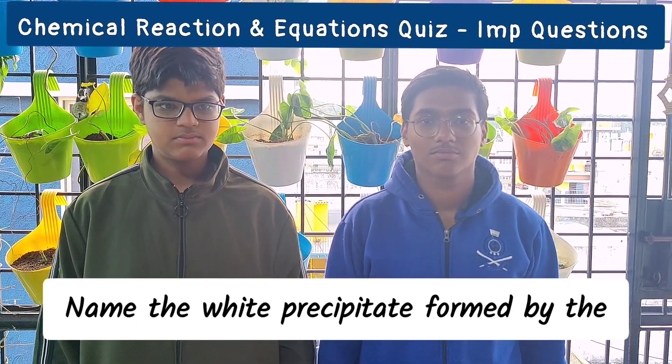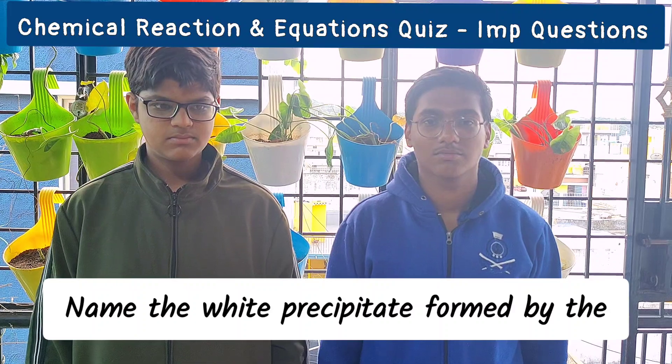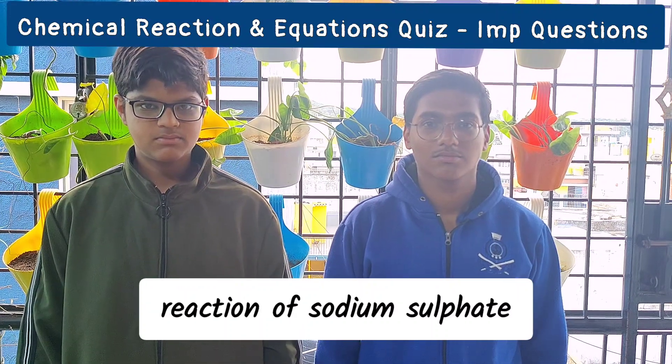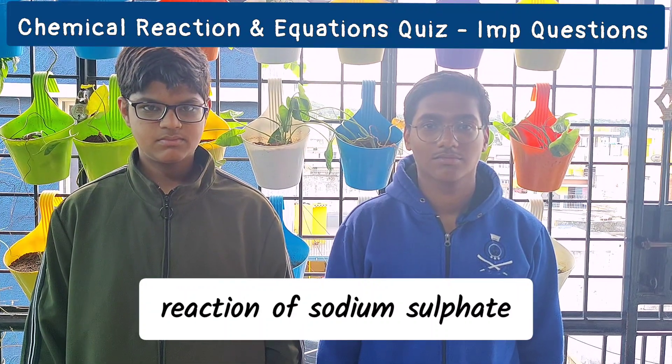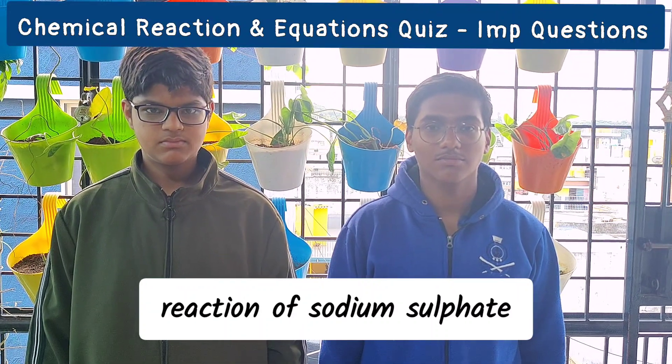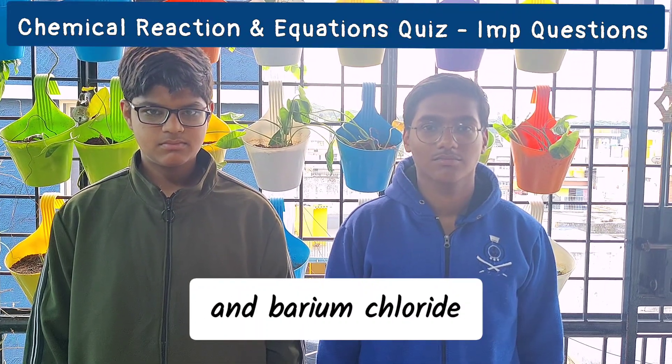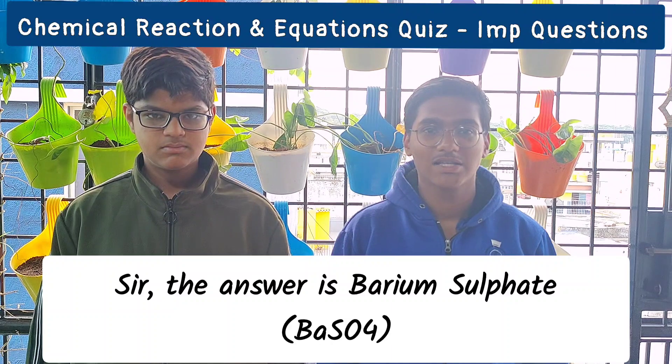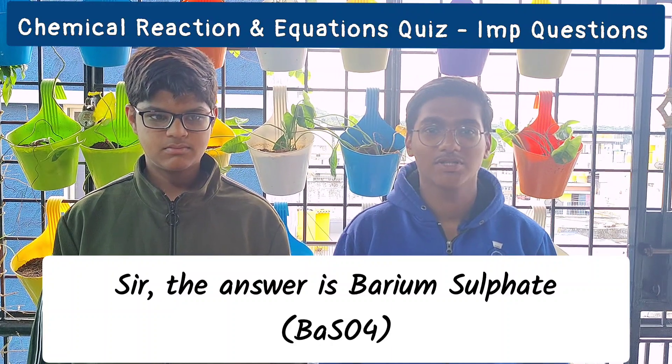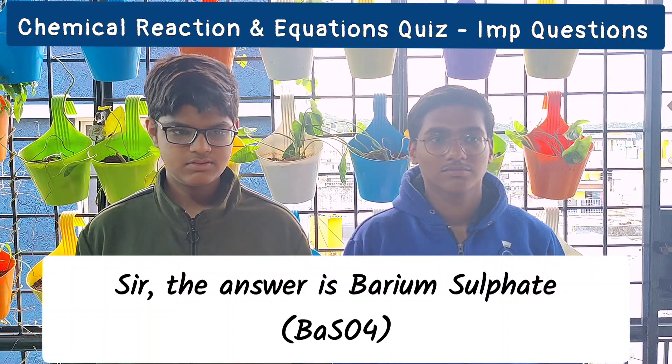Question 5: name the white precipitate formed by the reaction of sodium sulphate and barium chloride. The answer is barium sulphate.